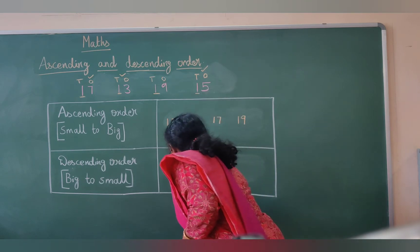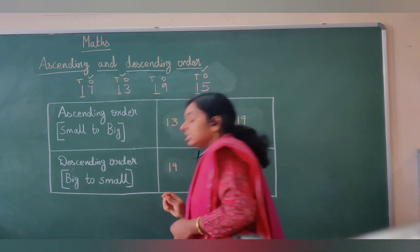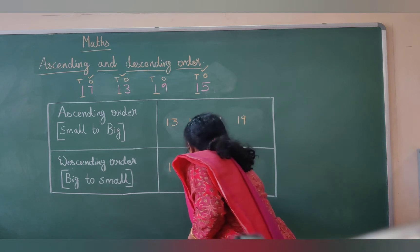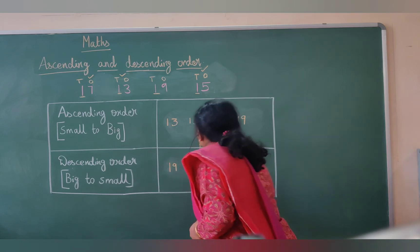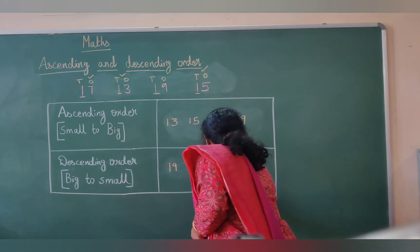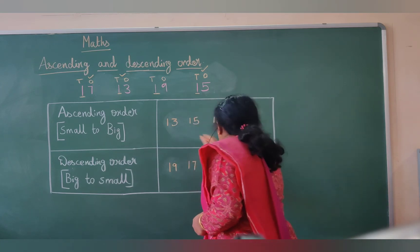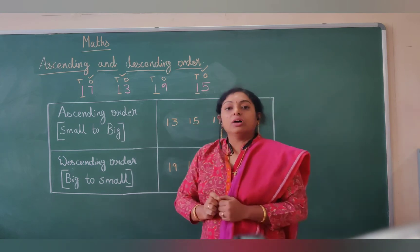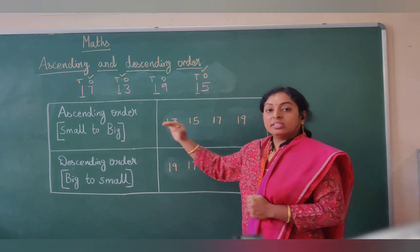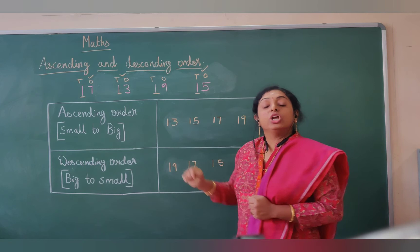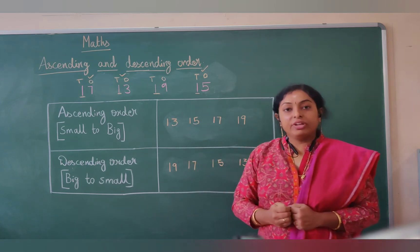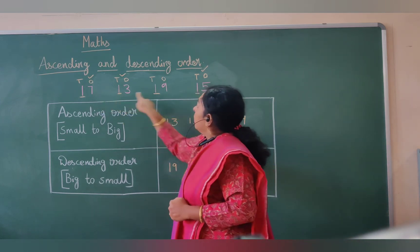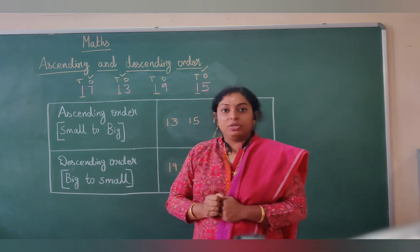For descending order, let me write 19 first because 19 is the biggest number, followed by 17, then 15, then 13. This is how we arrange numbers in ascending and descending order when they have common digits in the tens place.